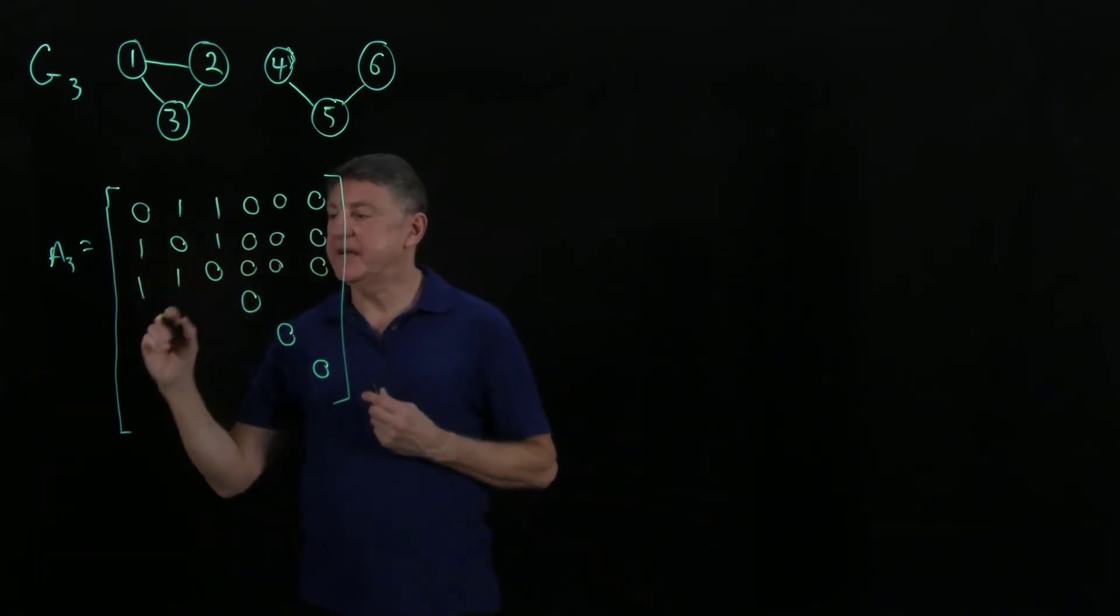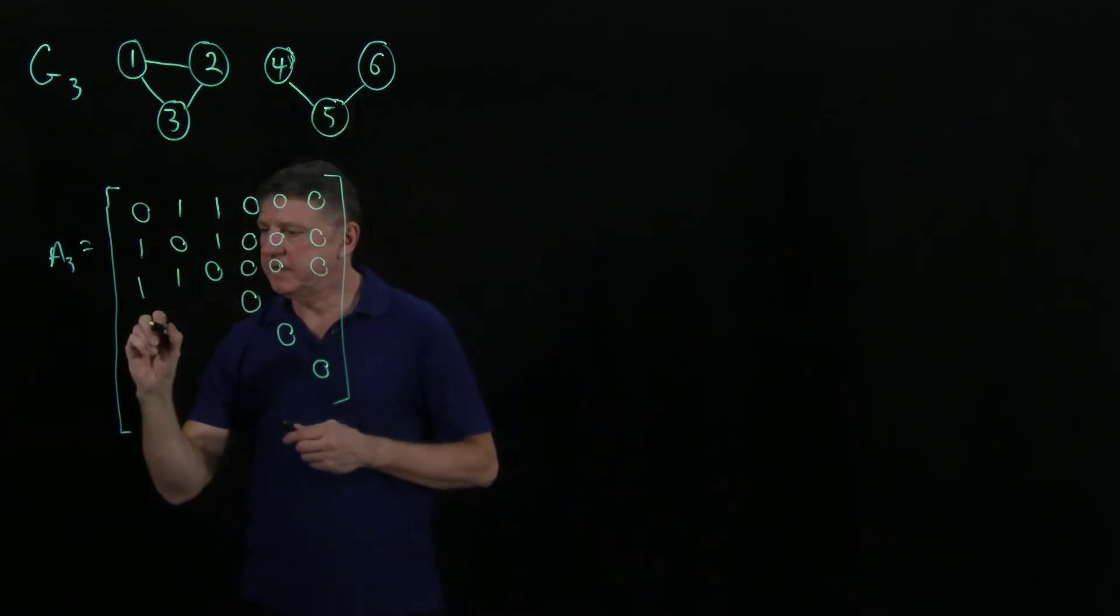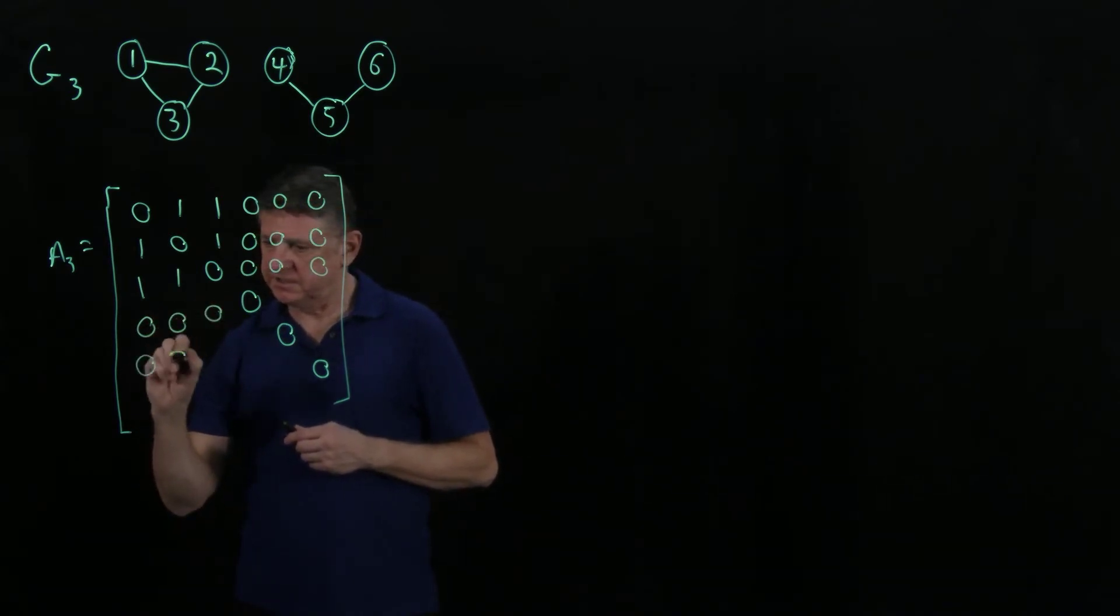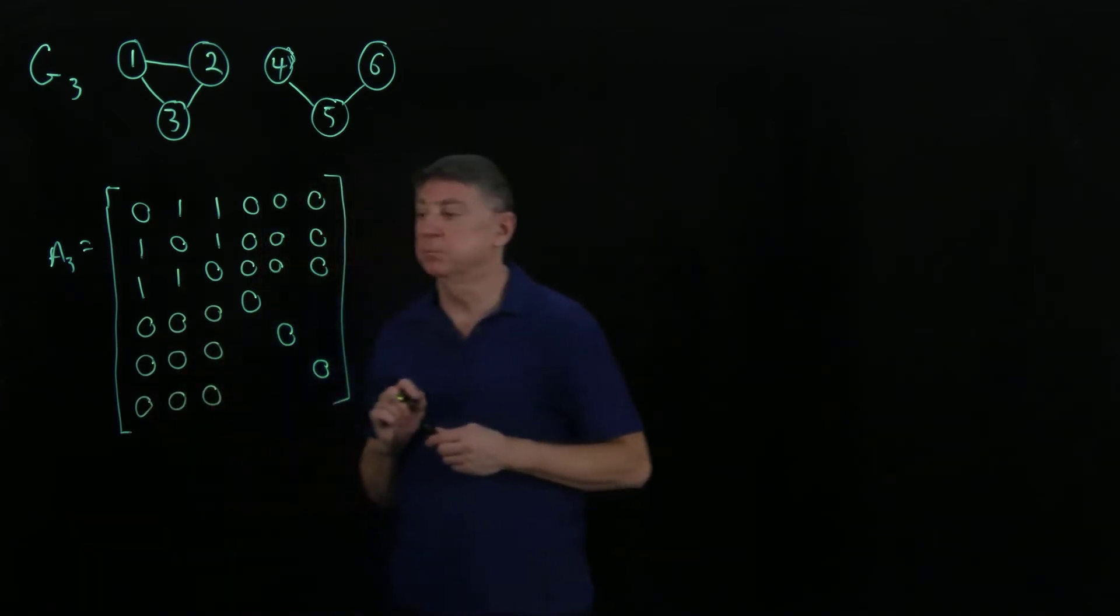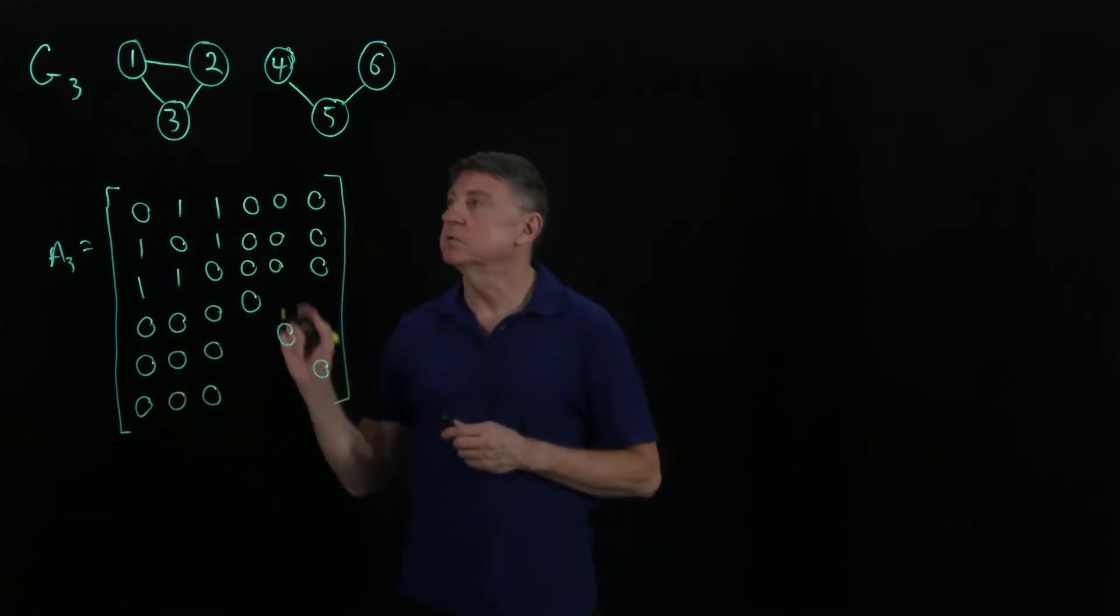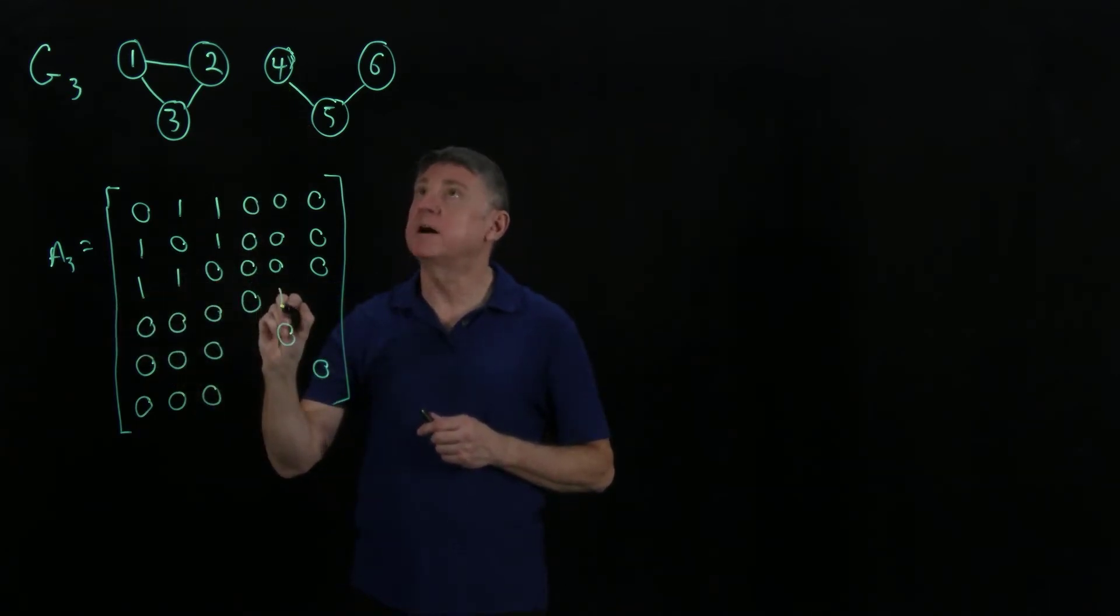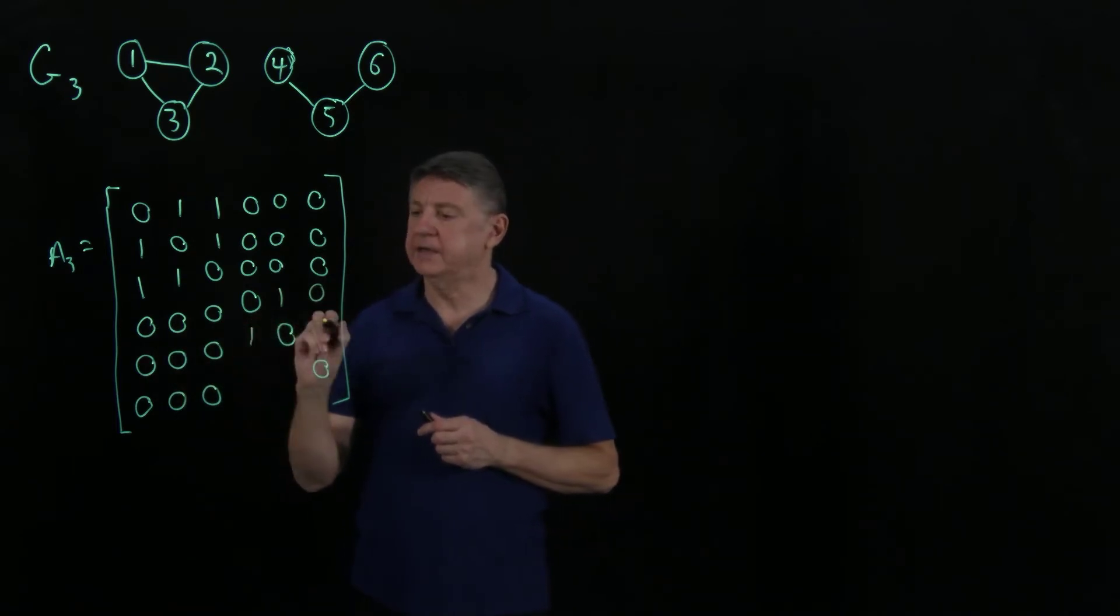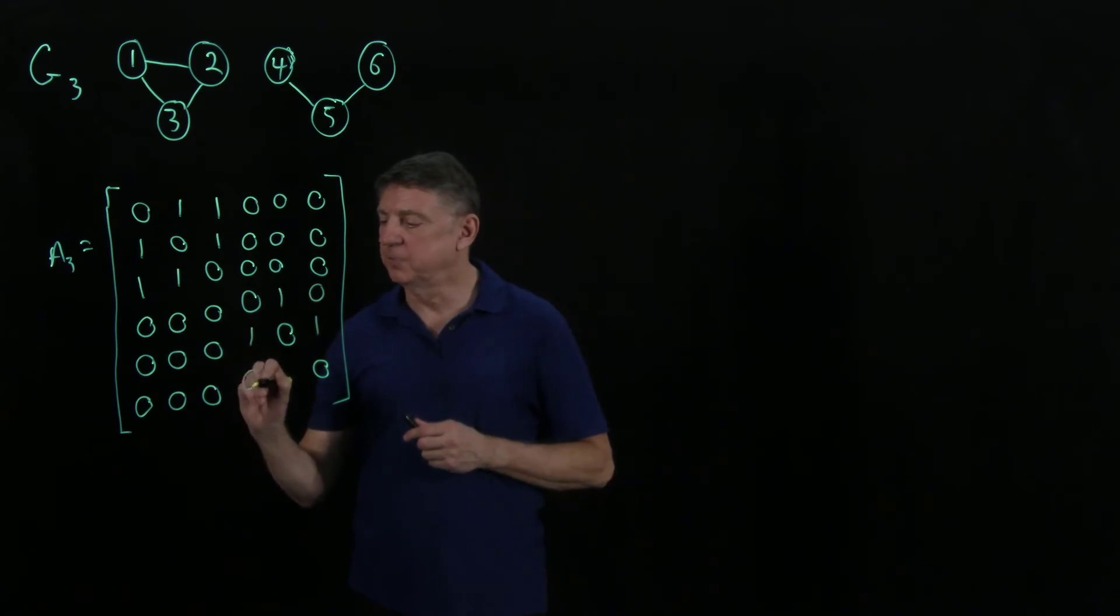4 is not connected to any of 1, 2, 3. Indeed, 4, 5, and 6. So I can now fill this entire section, this entire block, if we're thinking of matrices as being block partitioned with zeros. And now I can fill in 4 is connected to 5, and it is not connected to 6. 5 is connected to 4, and is connected to 6. 6 is not connected to 4, and 6 is connected to 5.